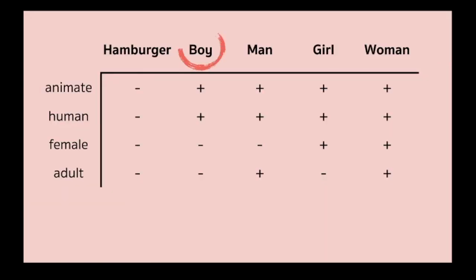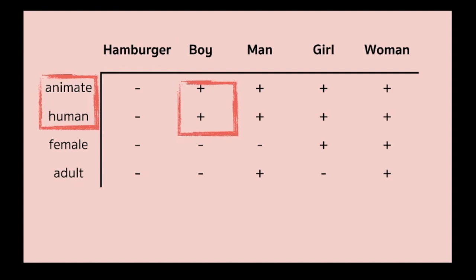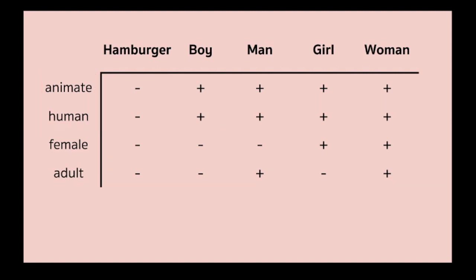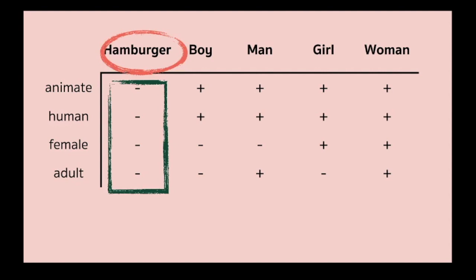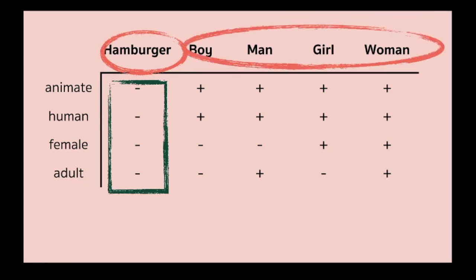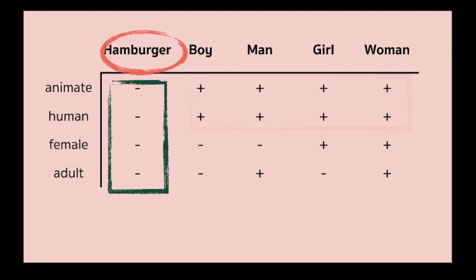As in your book, the word 'boy' can have the features of animate and human. We can use componential analysis to describe part of the meaning of words. If a word has a particular feature, we mark it by using plus; but if a word does not contain that feature, we mark it by using minus. So the word hamburger doesn't contain the features of animate, human, female, or adult — that's why we mark it with minus. But the words boy, man, girl, and woman contain the feature of animate, so we mark them with plus. This feature analysis helps us group words that share basic features to avoid odd or strange meanings in sentences.